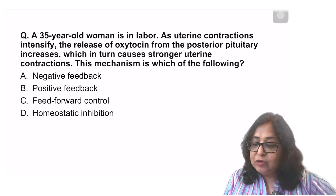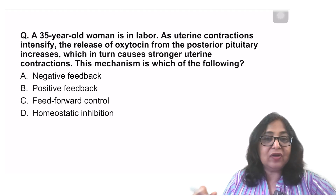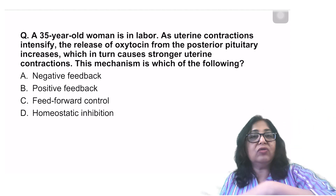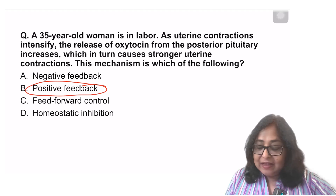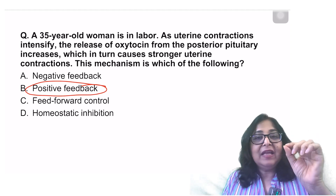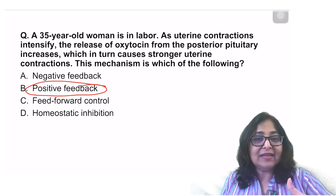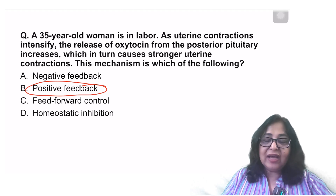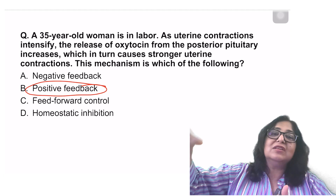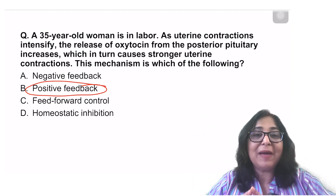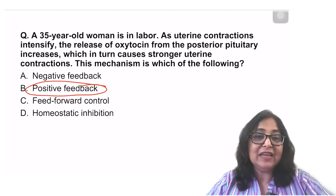A 35-year-old woman is in labor. As uterine contractions intensify, the release of oxytocin from the posterior pituitary increases, which in turn causes stronger uterine contractions and more release of oxytocin — this is a positive feedback mechanism. In negative feedback, the initiating stimulus is reversed. Here, uterine contractions cause release of more oxytocin, which causes stronger contractions, which causes more oxytocin release. Had there been a decrease in oxytocin release, that would be negative feedback. Feed-forward is anticipatory control.